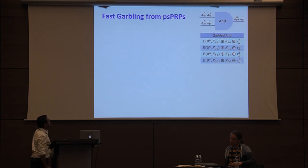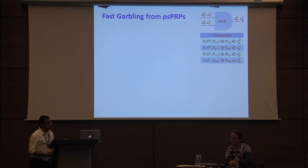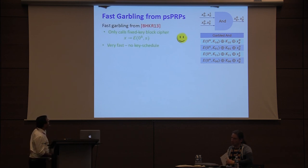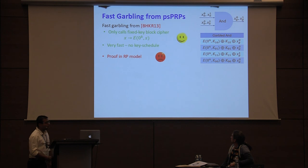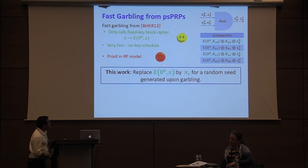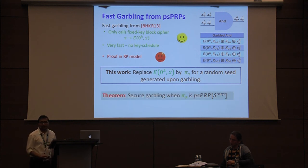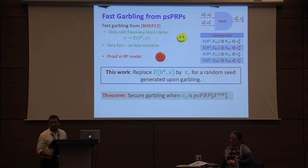As a direct application, we study garbling, which has applications as far as multi-party computation. We study fast garbling from BHKR, which only makes calls to fixed-key block ciphers and hence is very fast, but has a proof only in the random permutation model. We show that if you replace the fixed-key block cipher with a PSPRP for a random seed, what you get is secure garbling in the standard model. This shows that PSPRPs are useful beyond just recovering applications of the UCE framework.